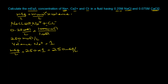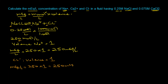We can repeat a similar process for the chloride ion from NaCl. The stoichiometric ratio between NaCl and the chloride ion is also one-to-one, so we still use 250 millimoles per liter. The valence of chloride is one (absolute value of −1 = 1), so mEq/L = 250 × 1 = 250 milliequivalents per liter.